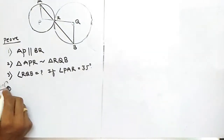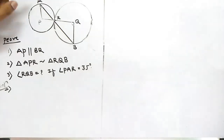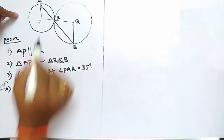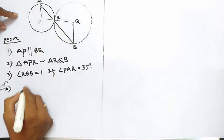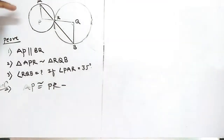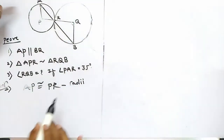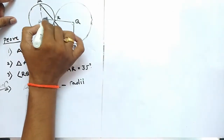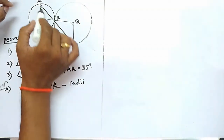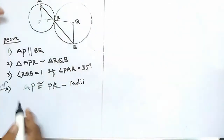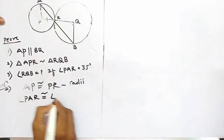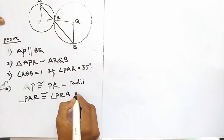Now let us see the solution. In the first part, we will show that AP is parallel to BQ. In triangle PAR, if we see carefully, AP is congruent to PR. The reason is that these are the radii of the same circle. We know that in an isosceles triangle, the angles opposite to congruent sides are also congruent. From this, we can show that angle PAR is congruent to angle PRA. This is equation one.